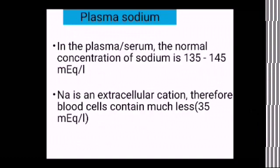Now, plasma sodium — the normal concentration of sodium in plasma or serum is 135 to 145 milliequivalents per liter. As I mentioned earlier, sodium is an extracellular cation — it is present outside the cell. Therefore, blood cells have a very low quantity, less than 35 milliequivalents per liter, and the majority is found in the plasma.